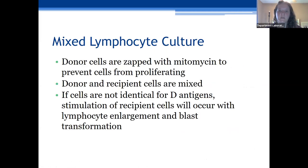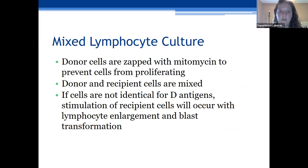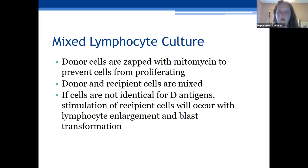In the mixed lymphocyte culture, donor cells are treated with mitomycin to keep them from proliferating, and donor and recipient cells are mixed — this is for your class two antigens. If the cells are not identical for those class two antigens, then the recipient T cells will be activated, proliferating and launching an attack, resulting in blast formation.